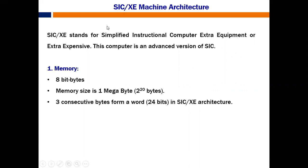Just like SIC, SIC-XE also has different components. The first one is memory. It is 8-bit bytes, just like in SIC. Here also it is taken as 8-bit bytes, and the memory size is 2 power 20 bytes. In SIC we had 2 power 15 bytes, whereas in SIC-XE the memory size is 2 power 20 bytes. Just like SIC, here also we take one word as 3 bytes.